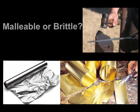Based on these three images, which property do you think metal has, being malleable or brittle? So malleable means able to be hammered or pressed out of shape without breaking, and brittle means to break easily. So based on these images, which property do you think metal has, malleable or brittle? Write it down in your notes.